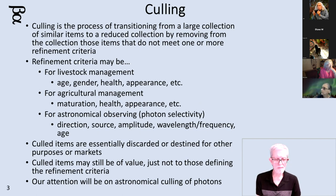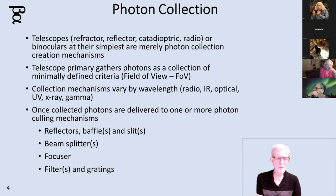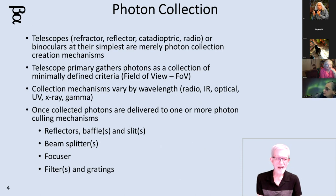Our focus will be on astronomical culling of photons. We have to start with getting that collection of photons. A telescope — be it a refractor, a reflector, a catadioptric, or even a radio telescope, an x-ray telescope, a gamma telescope, or even just simple binoculars — all of these are photon collection creators. They gather photons, and then you have to do something with them.